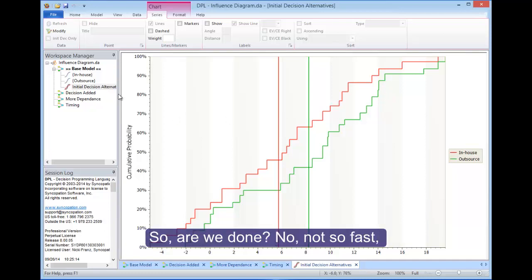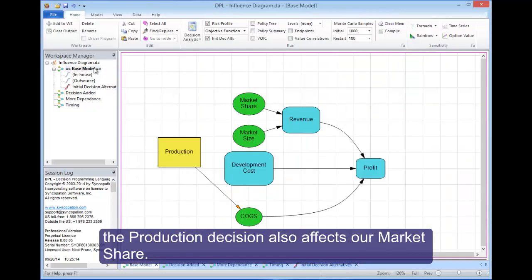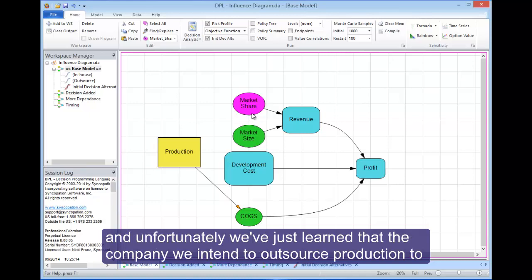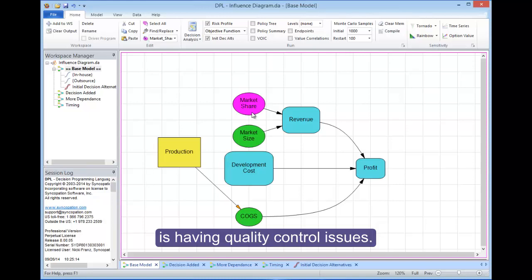So are we done? No, not so fast. The production decision also affects our market share. Quality problems within the production process can lead to low market share, and unfortunately we've just learned that the company we intend to outsource production to is having quality control issues.